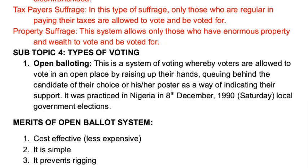Number one, we have the open ballot system. In this type of voting system, voters are allowed to vote in an open place by raising up their hands and queuing behind the candidate of their choice. That is what is regarded as the open ballot system of voting.